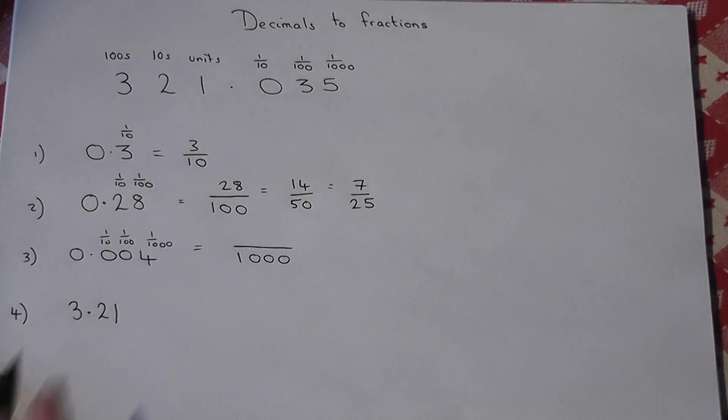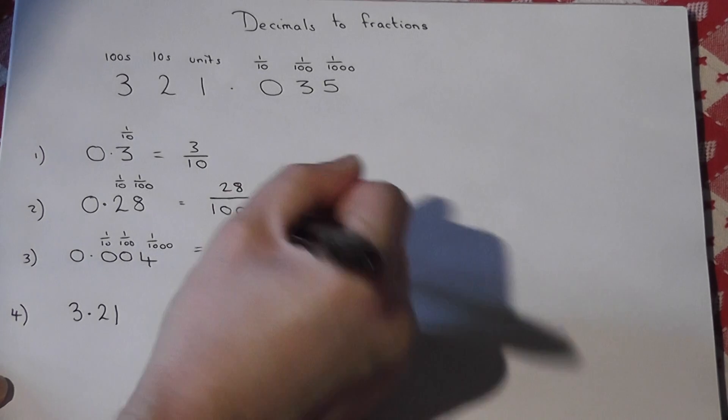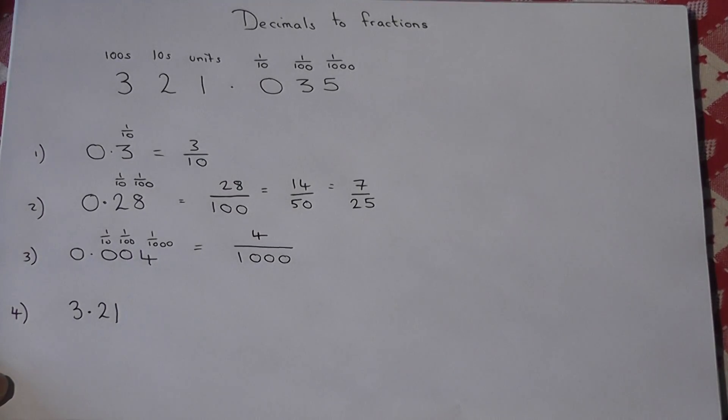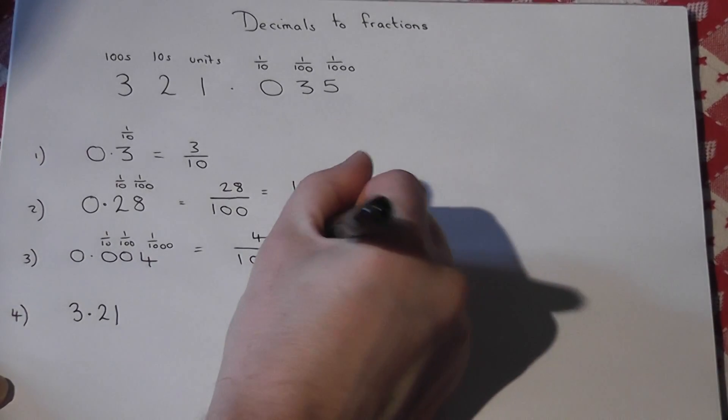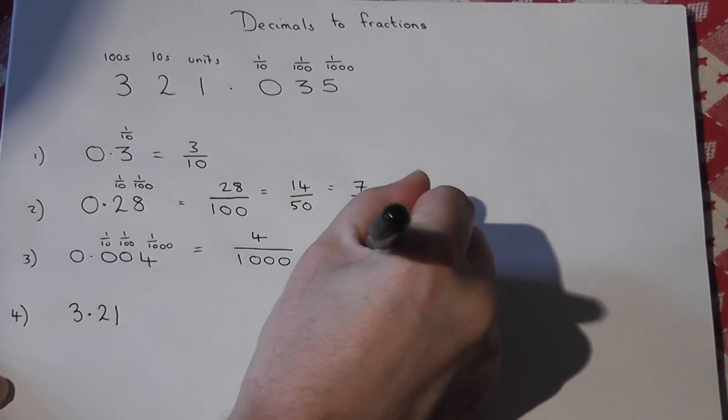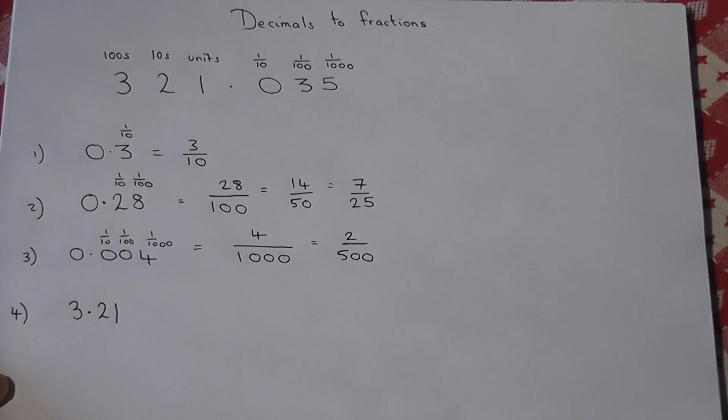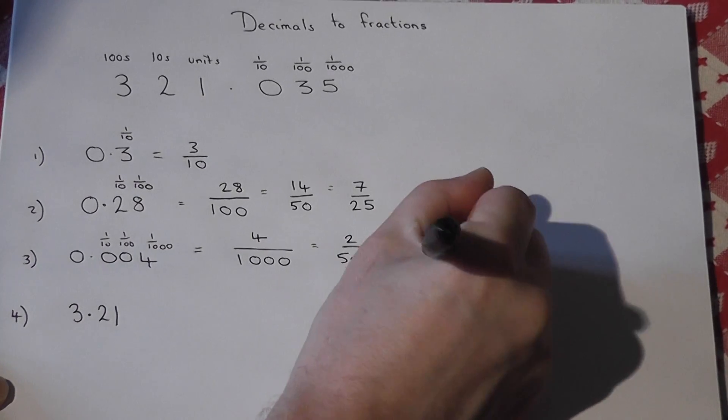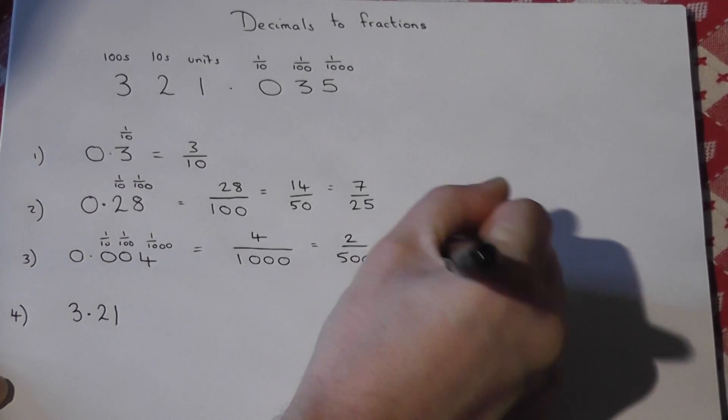And we've got zero, zero, four, so it's four thousandths. This also cancels down. I can divide by two, so two over five hundred. And I can then divide by two again, so one over two hundred and fifty.